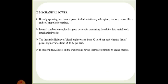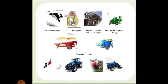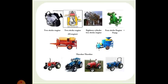In modern days, almost all the tractors and power tillers are operated by diesel engines. The diesel engines are used for operating irrigation pumps, flour mills, oil ghanies, cotton gins, chaff cutters, sugar cane crushers, threshers, winnowers, etc.